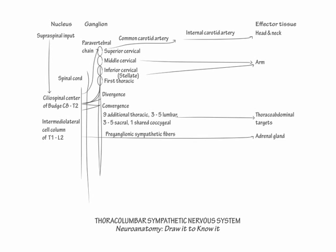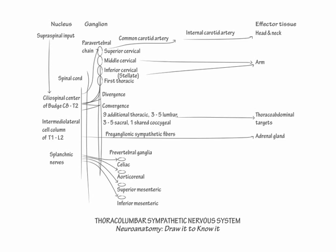Next we will show the splanchnic nerves innervate the four prevertebral ganglia, which span from the lower thoracic to the sacral vertebral column. The prevertebral ganglia from superior to inferior are the celiac, aorticorenal, superior mesenteric, and inferior mesenteric ganglia.